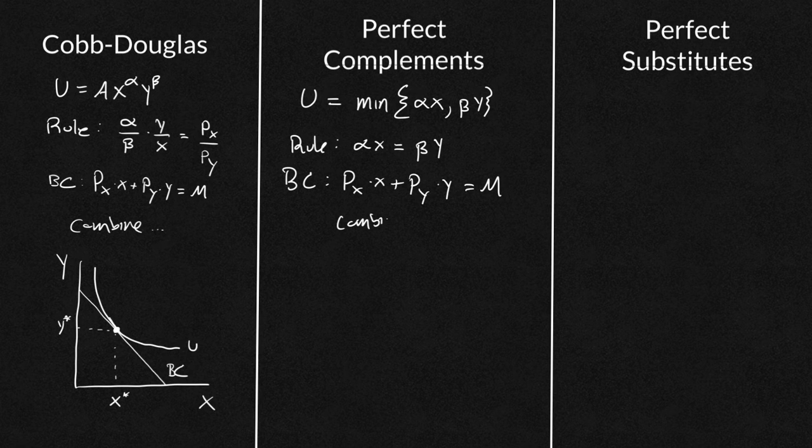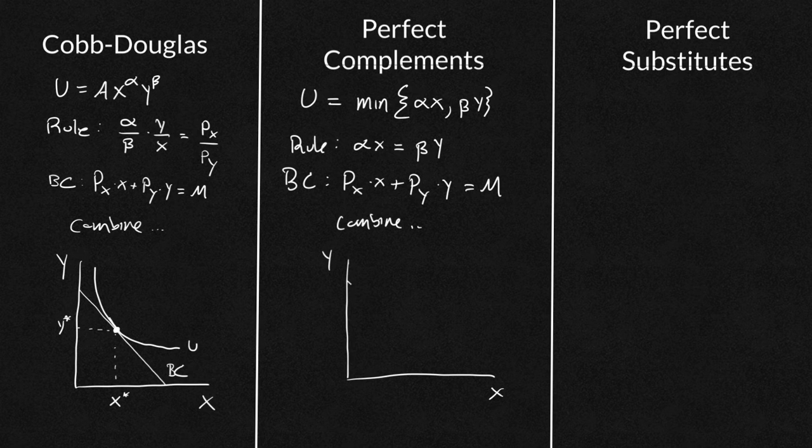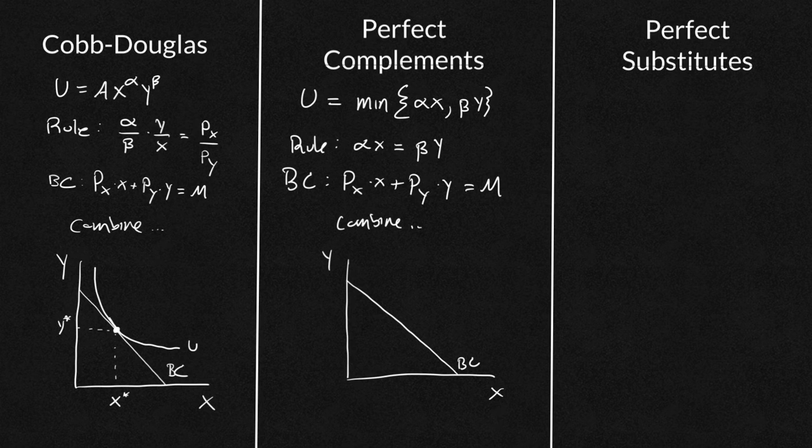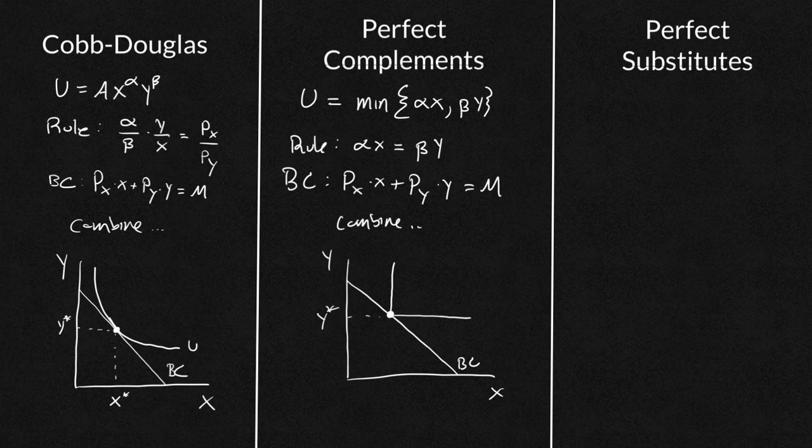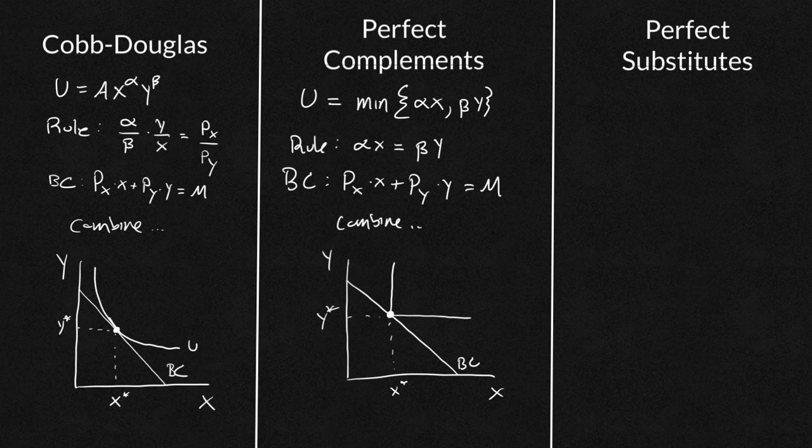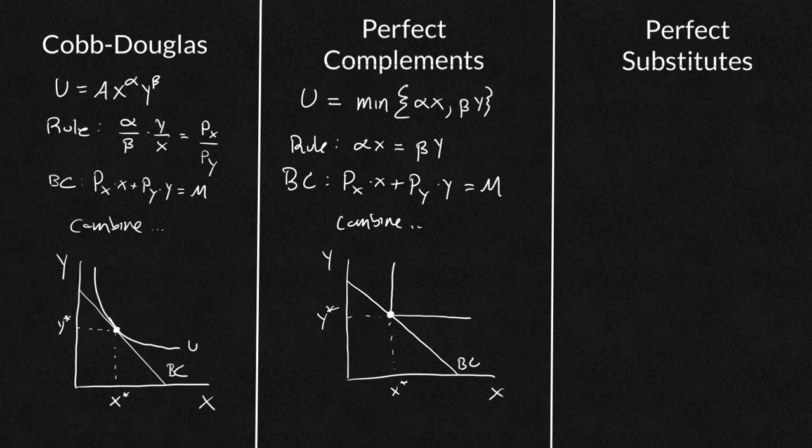Your budget constraint will be P of X times X plus P of Y times Y equals M. And again, you're just going to combine these. Now what does this one look like as a review? We have X and Y, I'm going to try and do best freehand of a budget constraint, there's my budget constraint. And you'll have some point here where your optimal point will fall. And so this will be your Y star, and this will be your X star. And I do have a video on maximizing with perfect complements, a mathematical example, which I'll make sure is linked. I think it ends up up here somewhere, I'll make sure it's up here, but also it'll be in the description.